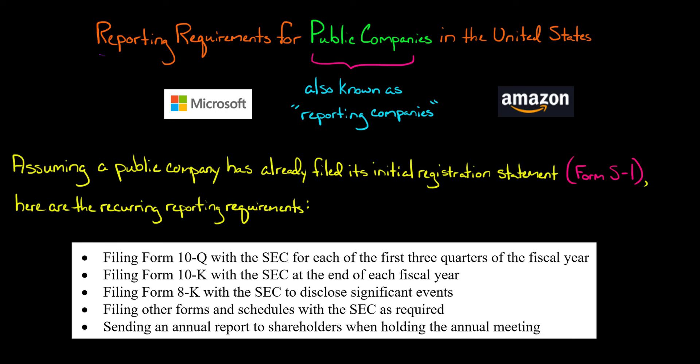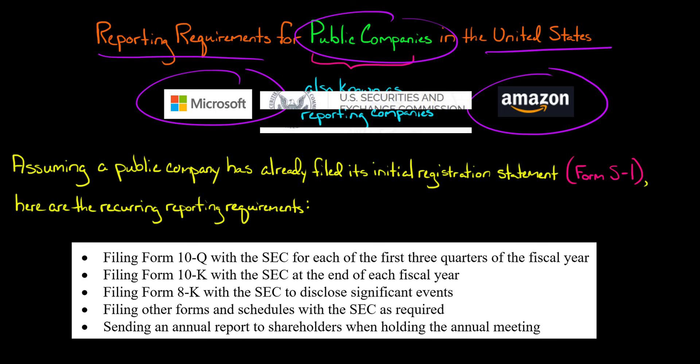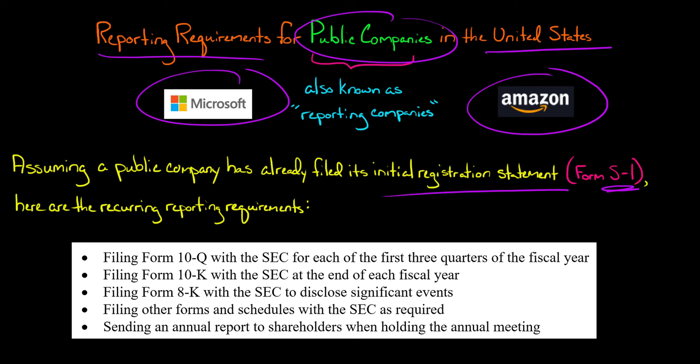In this video I'm going to talk about the reporting requirements for public companies in the United States. Public companies like Microsoft and Amazon need to file a number of reports with the Securities and Exchange Commission. Assuming that a public company has already gone public, which means it's filed its initial registration statement called the S-1 and did its IPO, it's going to have a number of recurring reporting requirements.